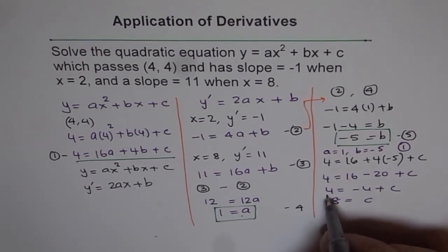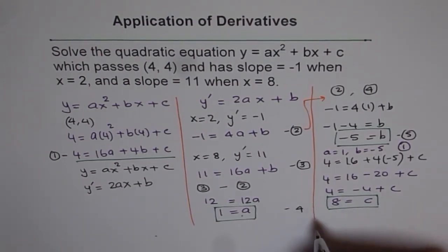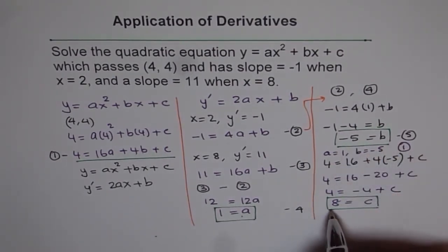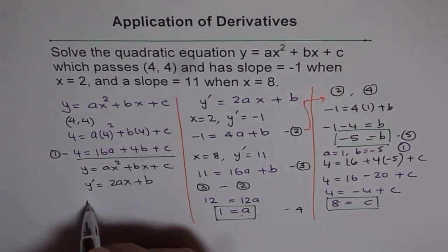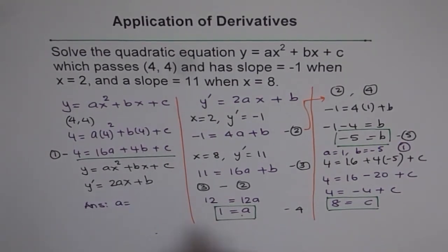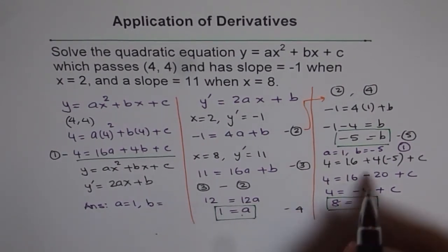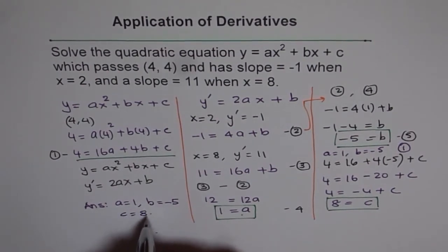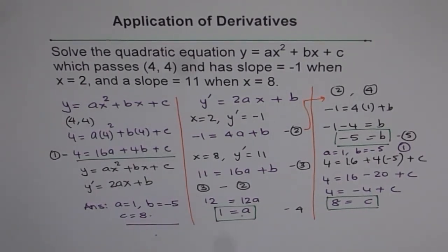We can now write our final answer: a equals 1, b equals minus 5, and c equals 8. The important takeaway is that when you have to find three unknowns, you need three equations and then simultaneously solve those equations to get the result. Thank you.